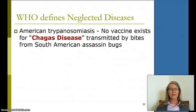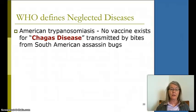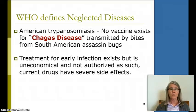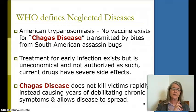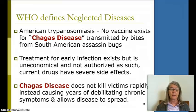Back to neglected tropical diseases: Chagas disease from Latin America is the South American version of trypanosomiasis. No vaccine exists, and it's transmitted by the bite of the assassin beetle. Treatment for early infection exists but it's very expensive and very toxic, with severe side effects. Prevention is always better. Chagas disease does not kill victims rapidly — American trypanosomiasis is fatal but of much longer duration, meaning the disease can spread further if left untreated.